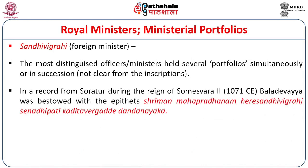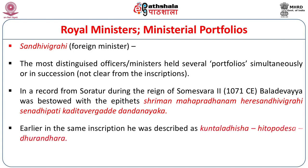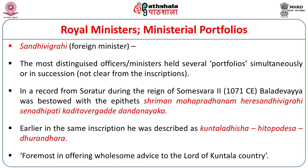The most distinguished officers generally held several portfolios simultaneously. In a record from Soratour, during the reign of Someshwara II dated 1071, Baladevaya was bestowed with the epithets: Sriman Mahapradhanam (chief minister), Heri Sandhi Vigrahi (senior foreign minister), Senadhipati (commander), Kaditavirgadde, and Dandanayaka. In the same inscription he is also described as Kuntaladhesha Shito-podesha Dhurandhara — foremost in offering wholesome advice to the lord of the Kuntala country.